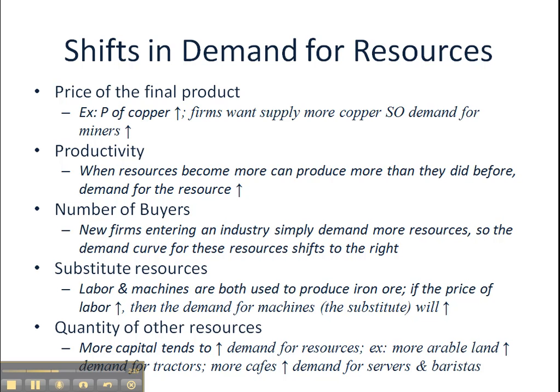Substitutability — when a change in the price of a substitute resource occurs, that will affect the demand for the resource we are analyzing. For instance, if labor and machines are good substitutes in the production of iron ore and the price of labor rises, then the demand for machines increases and the demand curve for machines shifts out to the right.